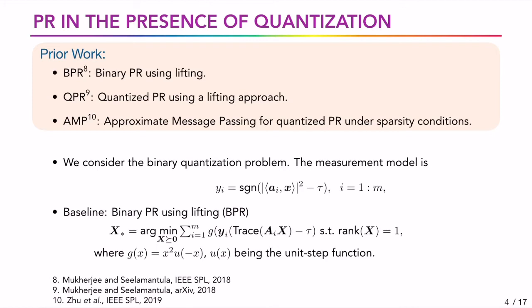We consider the binary quantization problem, which is the simplest form of quantization. It is modeled using a signum function with an offset. The offset is required as all the measurements are positive. We consider the BPR approach by Mukherjee and Seelamantula as a baseline for comparison. The exact cost function is given in this slide. The optimization is done by projected gradient descent, where the projection is on the set of rank 1 matrices. They also start the solution with a zero initialization.